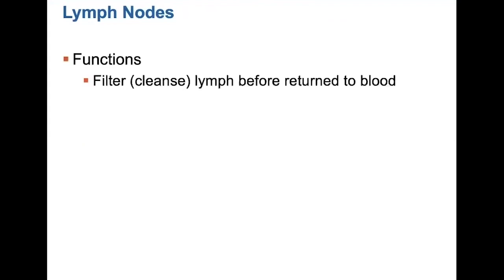Let's take a look at the lymph nodes. There are two functions for the lymph nodes. The first function is to filter the lymph that is flowing through them before the lymph is returned to the blood. During this filtering process, microbes such as viruses and bacteria are removed from the lymph. About 95% of these pathogens are removed at the lymph nodes.